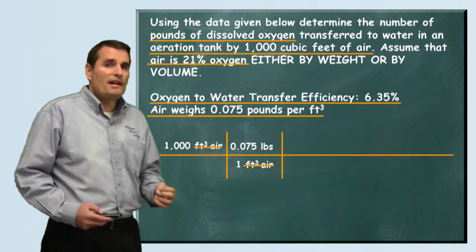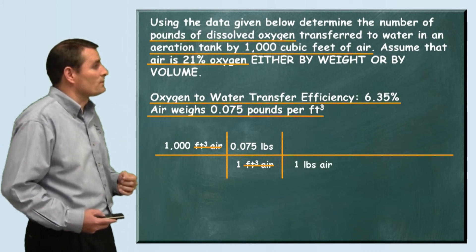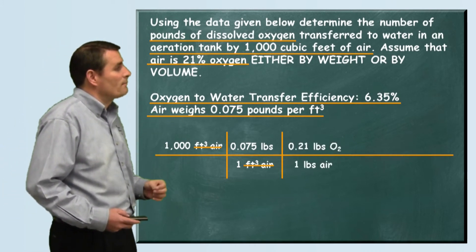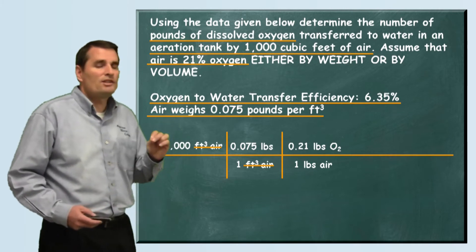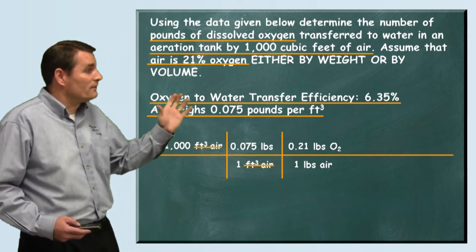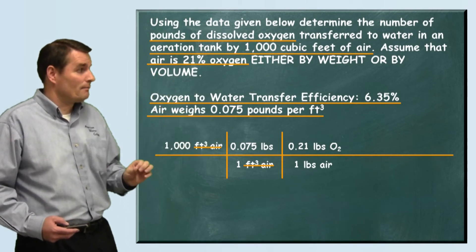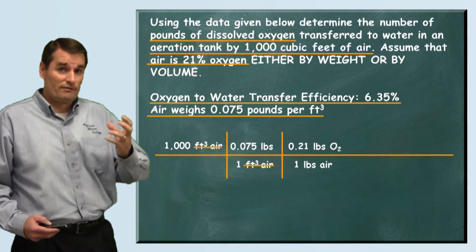For every pound of air, how many pounds of oxygen do we have? That's where the 21% comes in. So for one pound of air, we get 0.21 pounds of oxygen. Now we've gone from this 1,000 cubic feet of air, and now we know how many pounds of oxygen were delivered.